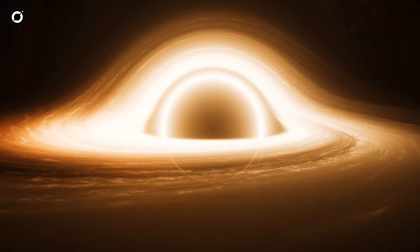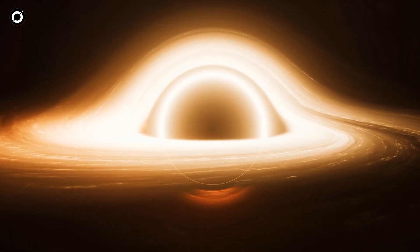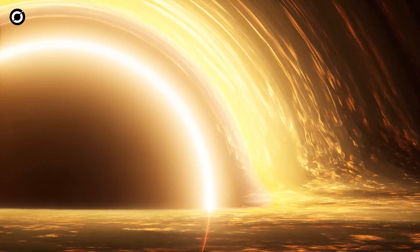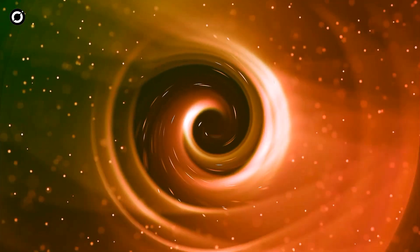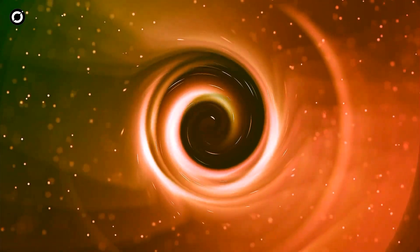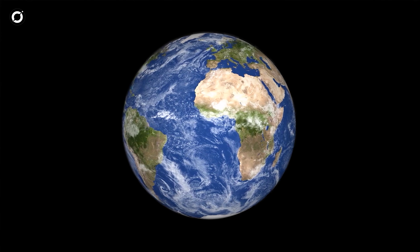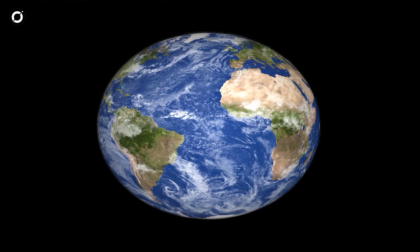If a black hole were to get close to Earth, the effects would depend on its mass, proximity, and how it was approaching. Black holes have extremely strong gravitational fields, and as one comes closer, the gravity would distort spacetime, leading to extreme forces. These forces could stretch and pull objects including Earth into long, thin shapes, a phenomenon known as spaghettification.